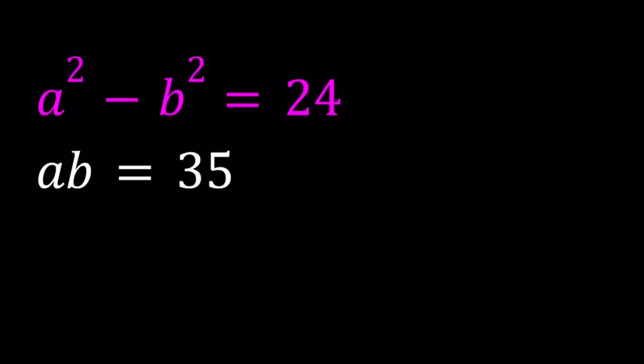Hello, everyone. In this video, we're going to be solving a polynomial system. We have a squared minus b squared equals 24 and ab equals 35. We're going to be looking for a and b values. I'll be presenting two methods, and then we're going to take a look at the graph of these two functions. So let's start with the first method.